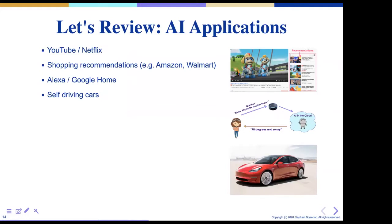So these are all applications for AI. Let's review — what are the AI applications we have seen? If somebody asks you what do we use AI for, we just saw a few. YouTube, Netflix recommendations — everybody watches these days. Online shopping — how they recommend things to buy. Alexa, Google Home — all of these. And most importantly, and this is what I'm really excited about: self-driving cars.